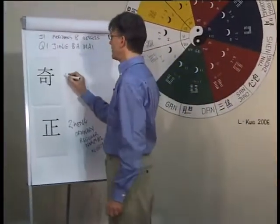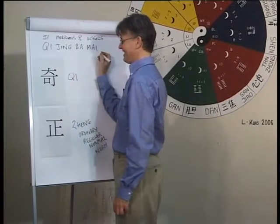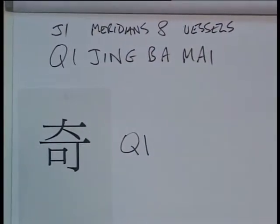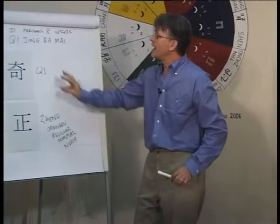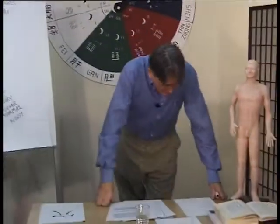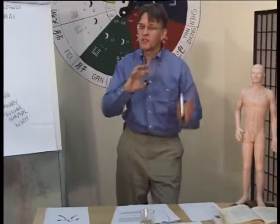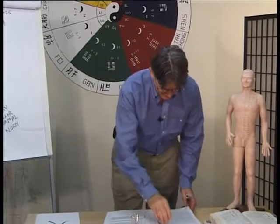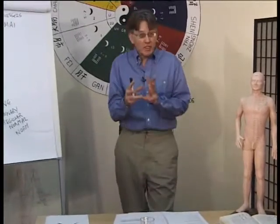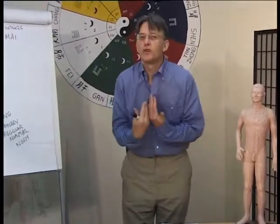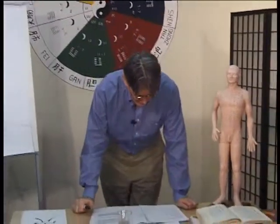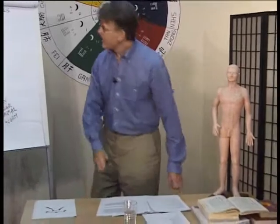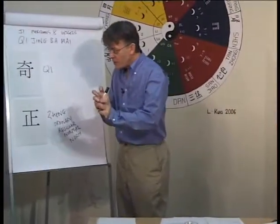But there are the Qi Jing, the extraordinary Meridians. Qi is... it's strange, or wonderful, or marvellous, special, unusual, remarkable. It's something extra.